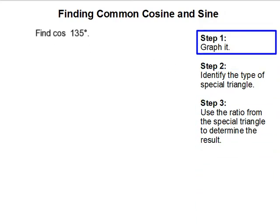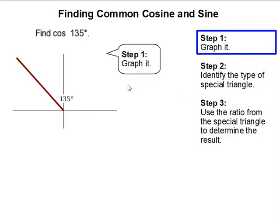Step 1: Graph it. So we're going to graph it, and to graph you start at this end right here and then you go up since it's positive 135 degrees, past the 90-degree mark, and that will get you a line that looks something like this. And that's 135 degrees.